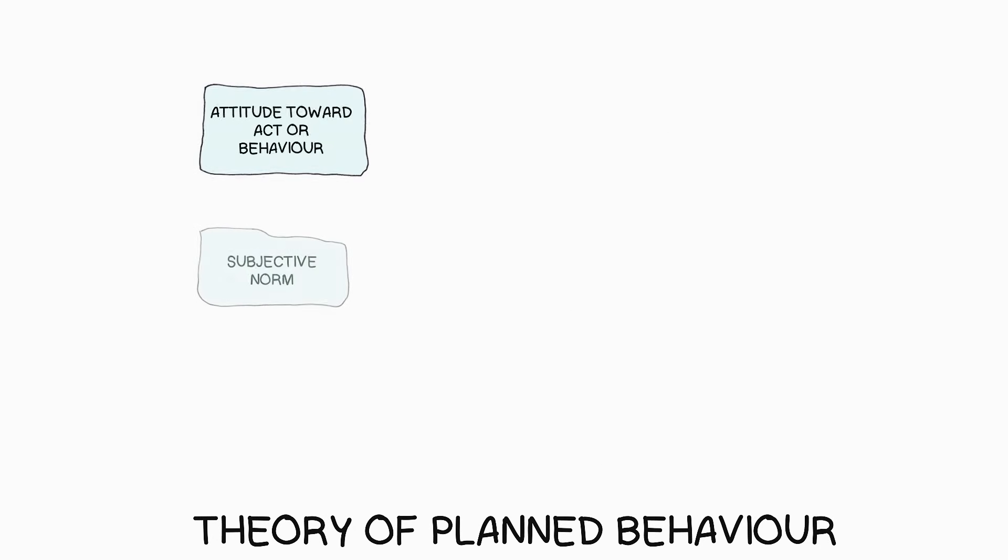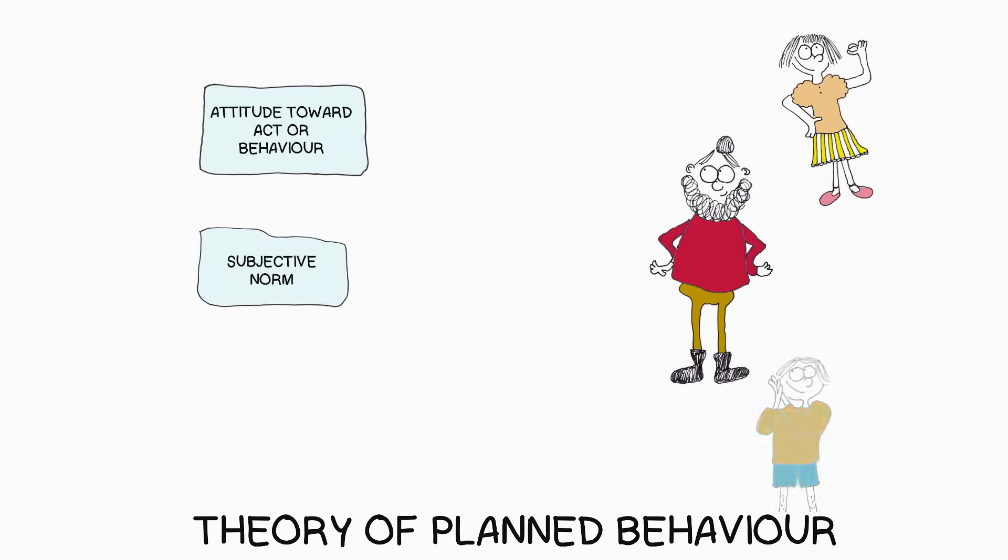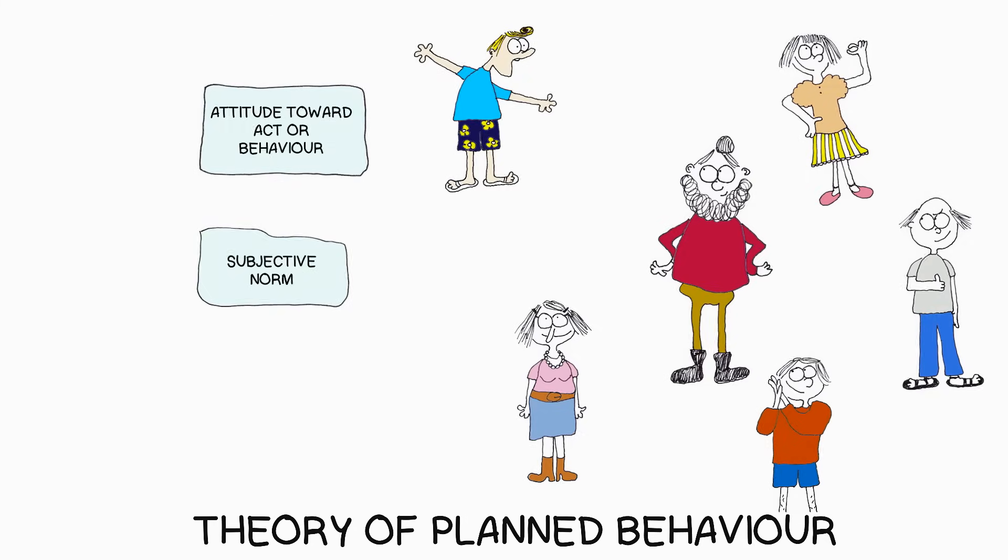A second construct is called subjective norm. This construct focuses on everything around the individual. In other words, his or her social network, cultural norms, group beliefs and so on.